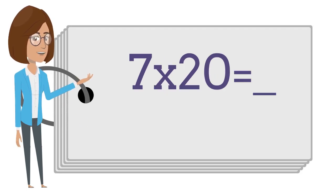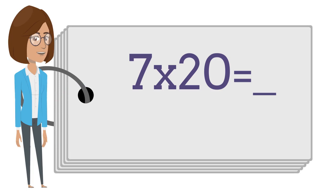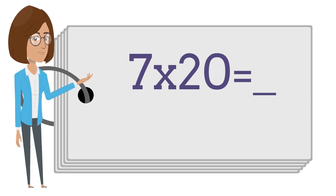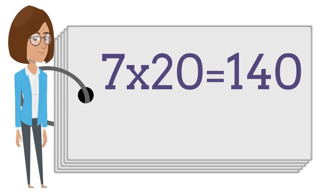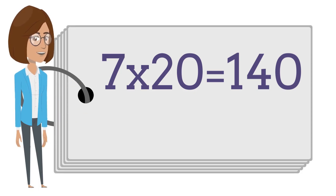7 times 20 is — say the answer out loud. 7 times 20 is 140.